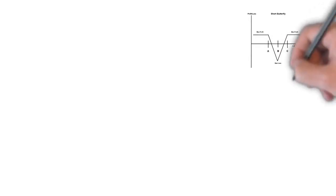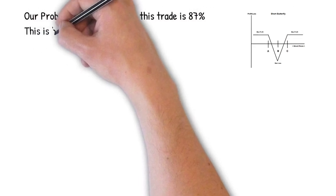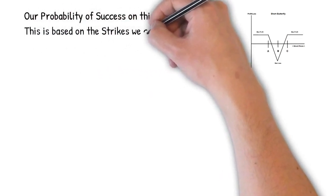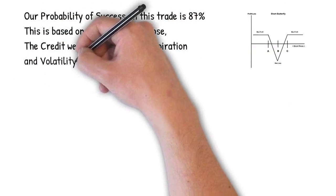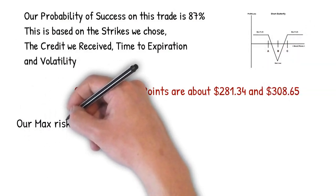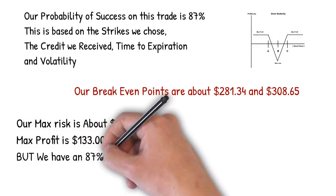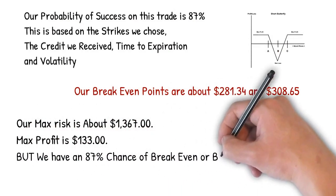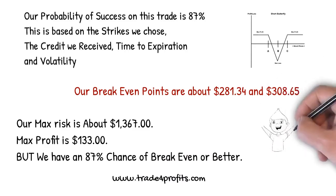The probability of success is very important to the way we trade butterflies. On this trade, we have an 87% chance of profitability. This is based on the strikes we chose, the credit we received, time to expiration, and current volatility. The break even points on this trade are about $281.34 and $308.65. Our maximum risk is about $13.67 and our max profit would be the $133 credit we received. But remember, we have an 87% chance of break even or better.